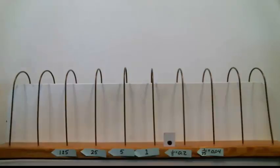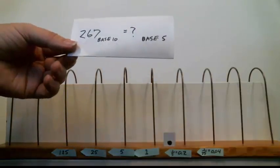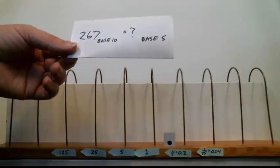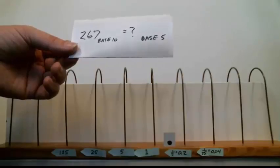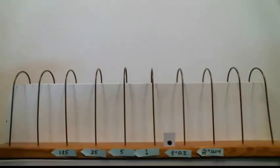Let's try a more complicated conversion of a base 10 number using our base 5 vertical abacus. Here's the problem I want to solve: 267 in base 10 is what on the base 5 abacus? So to solve this problem, we proceed like we did before. I want to hold this up so we can still see it.